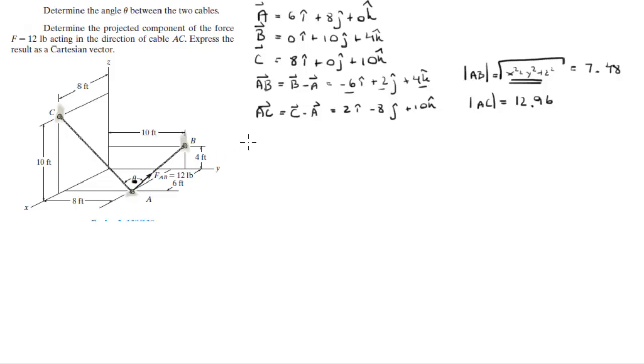So now you know that by definition, the dot product AB dot AC is the same as the magnitude of AB times the magnitude of AC times the cosine of the angle between them.